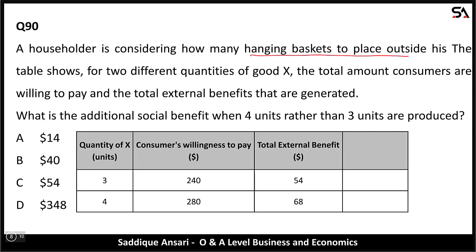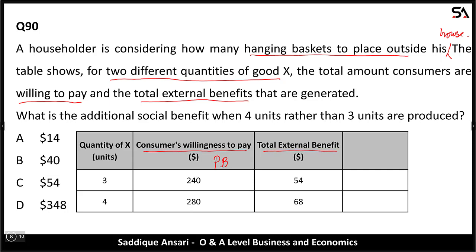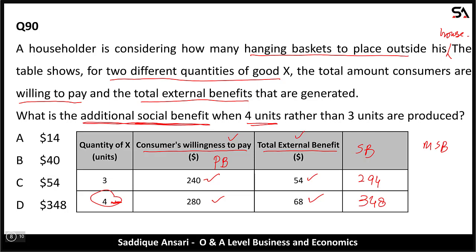Next: a householder is considering how many hanging baskets to place outside his building. The table shows for two different quantities the total amount consumers are willing to pay — this is private benefit — and total external benefit. Social benefit = private benefit + external benefit: 240+54=294 and 280+68=348. Marginal social benefit of the fourth unit = 348-294=54. Option B is the correct answer.